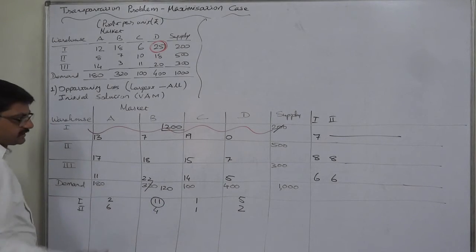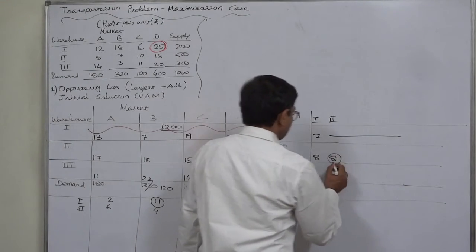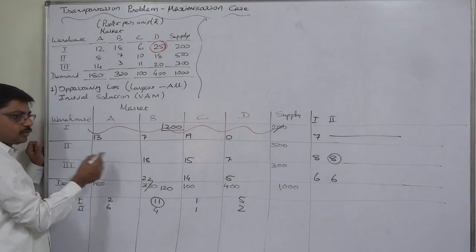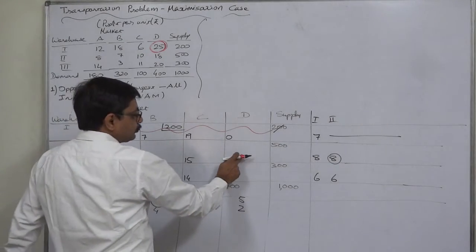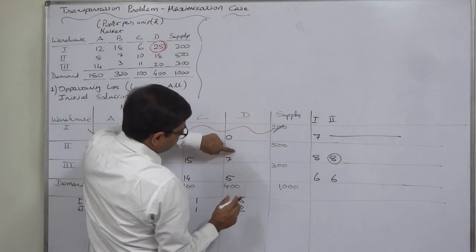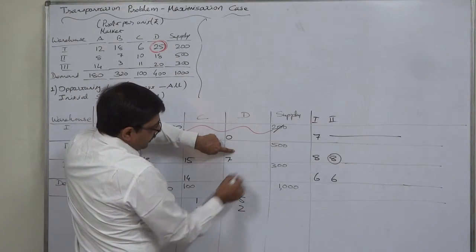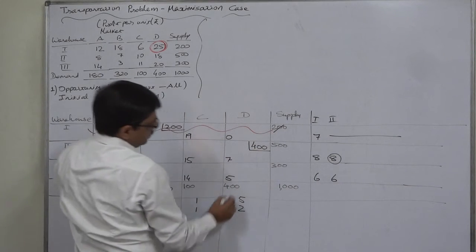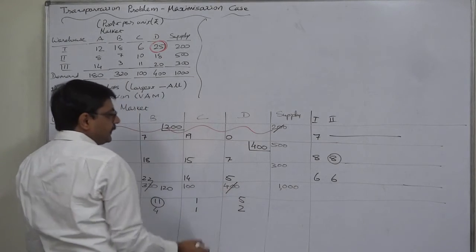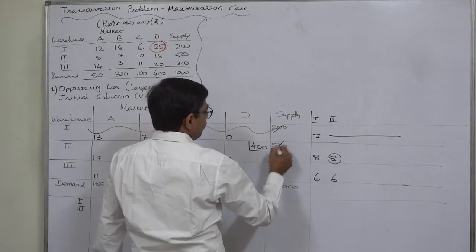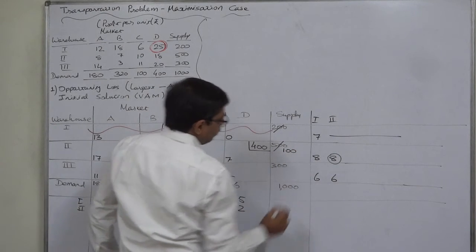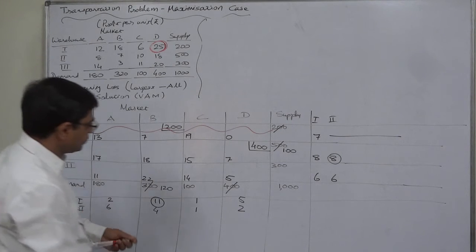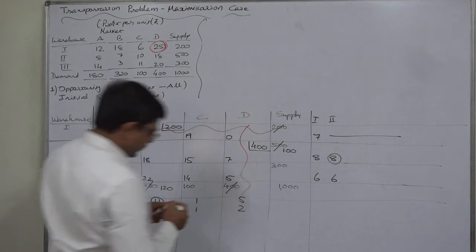Comparing penalties: 8, 6, 2, 1, 4, 6 — the highest is 8. By selecting 8 we have actually selected row 2. In row 2, select the cell with the least cost, which is the cell with 7. Demand is 400, supply is 500 — whichever is lower is the quantity to be allocated, so it is 400. Demand of column D is satisfied. Supply of warehouse 2 was 500; we allocated 400, so we still have supply of 100 remaining. We cancel column D because it is fully satisfied.